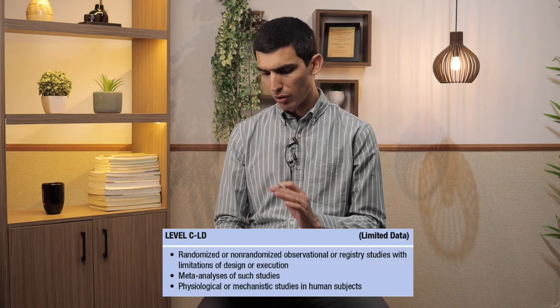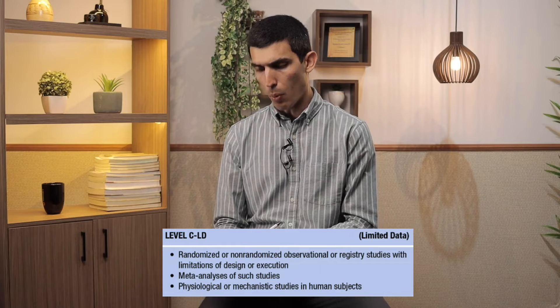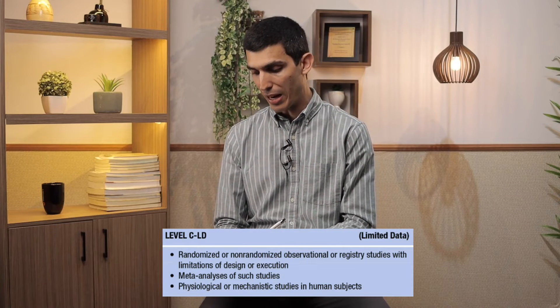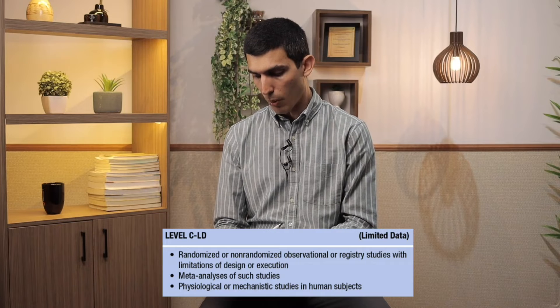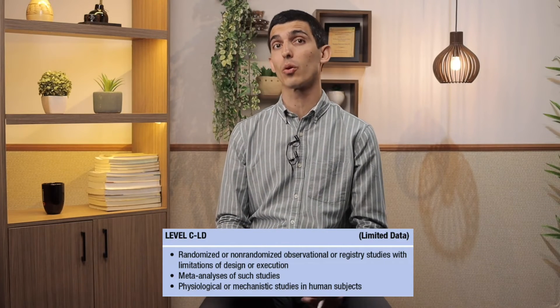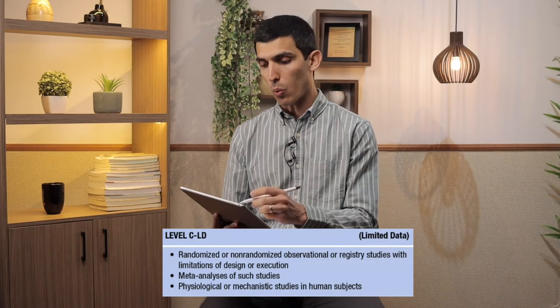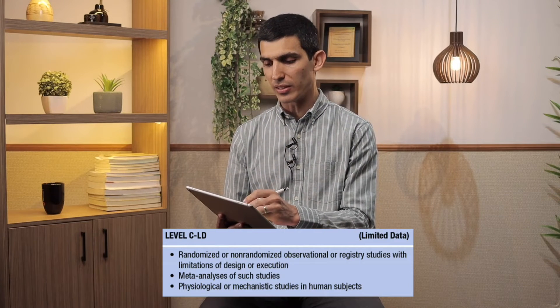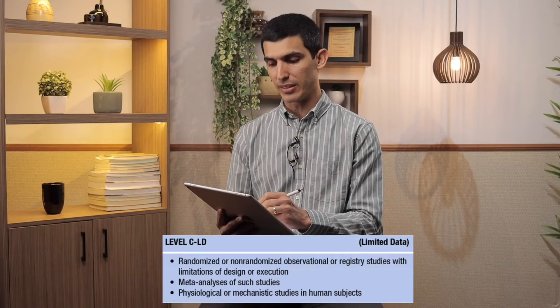Finally, we have level of evidence C, which means low quality evidence. Maybe you have poor quality studies, studies at high risk of bias, expert opinion, or findings based on clinical experience. Maybe you have just observational or registry studies, but the quality isn't so good. If the quality of evidence supporting any recommendation is not good, then you will have a level of evidence C.